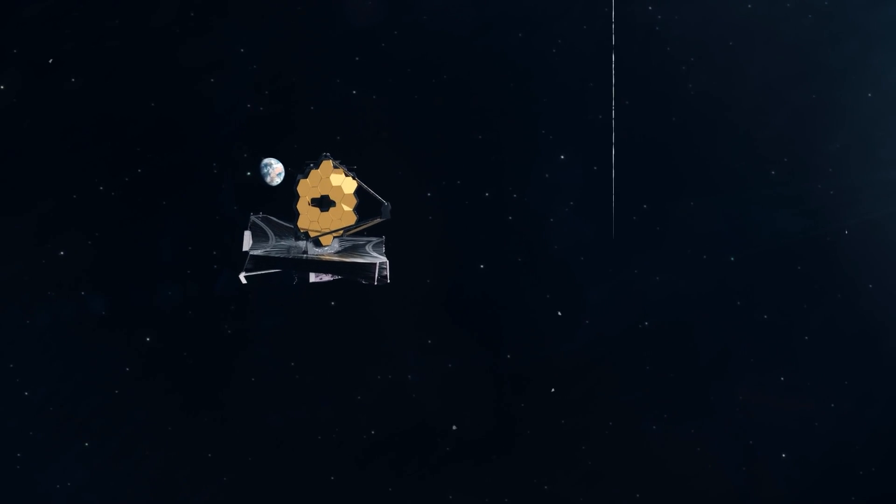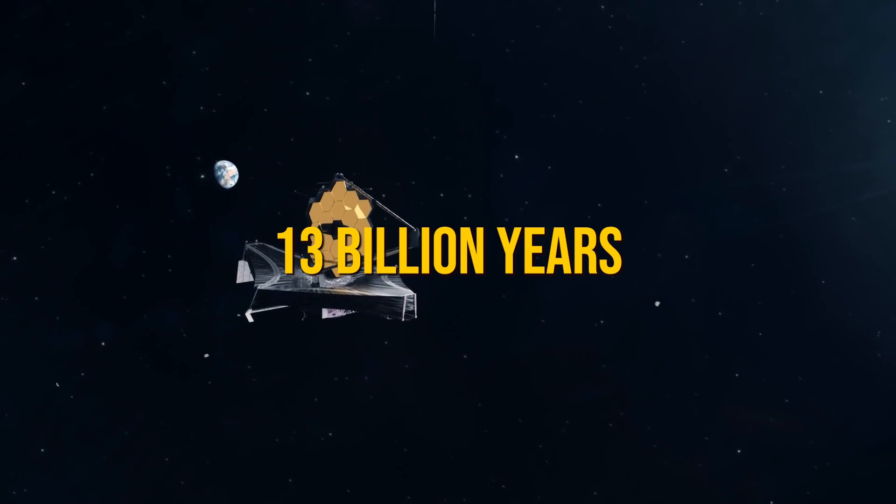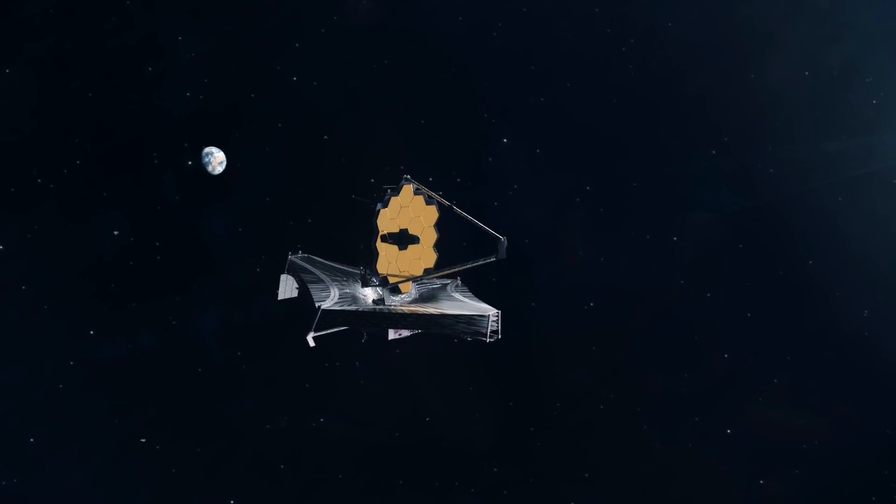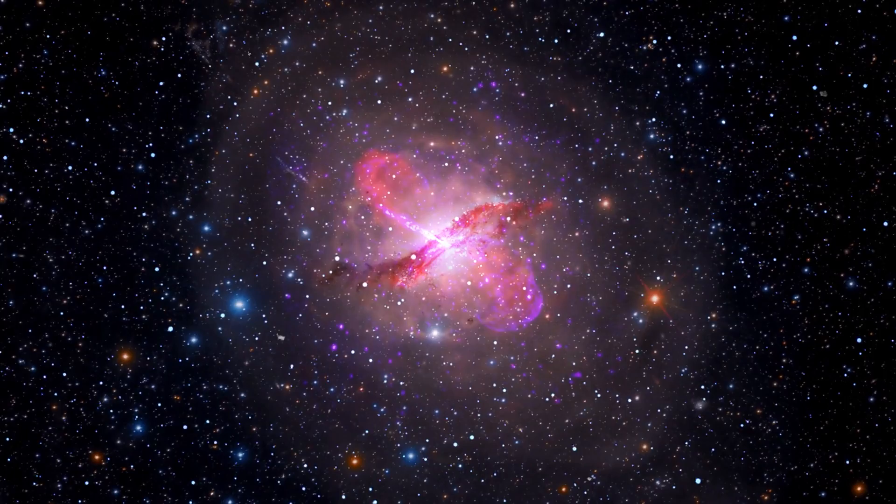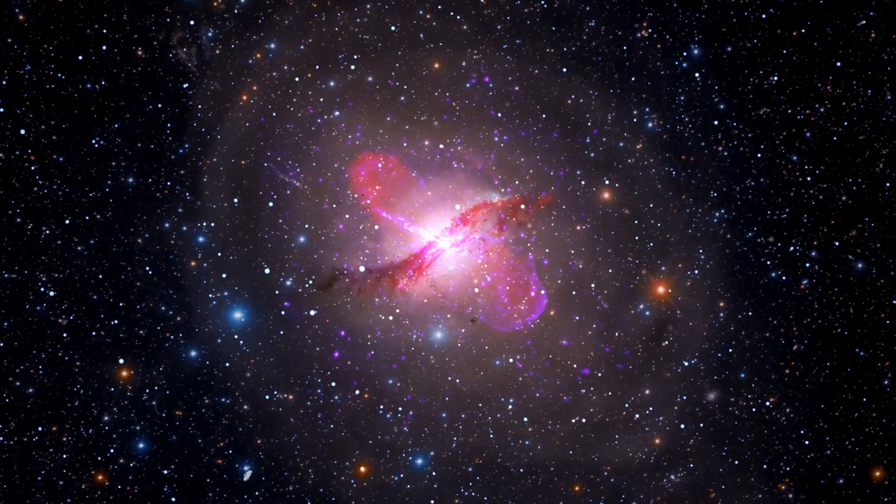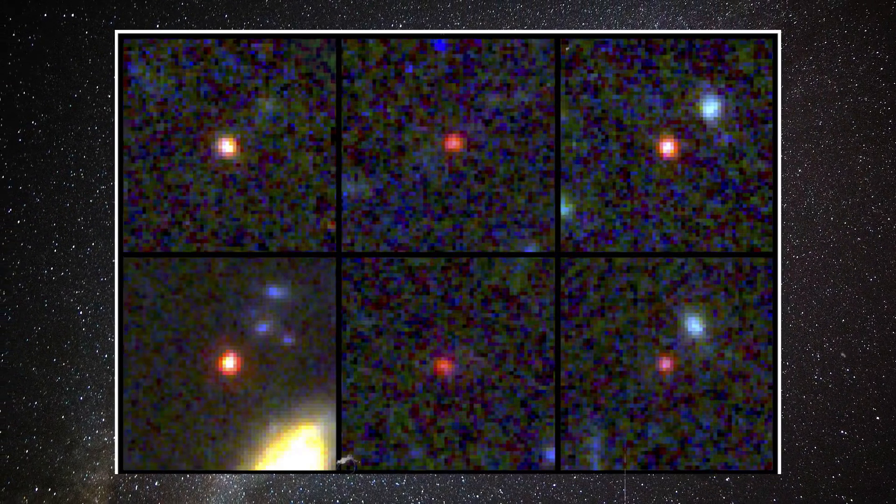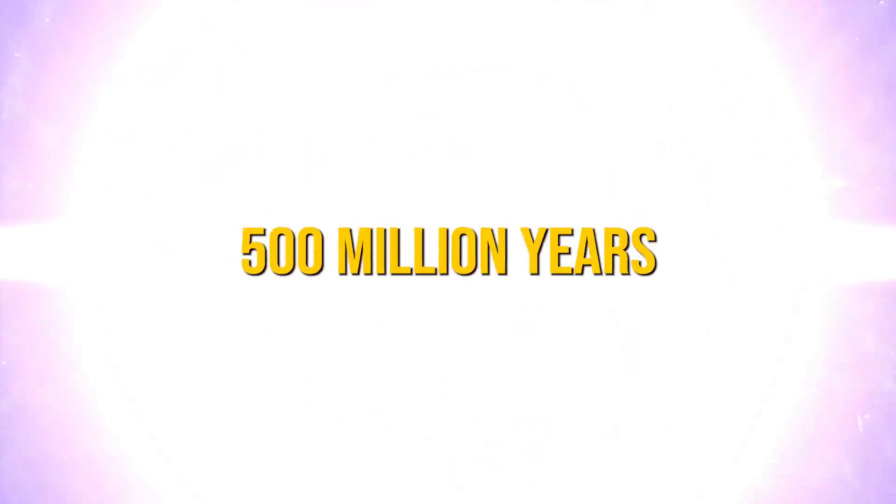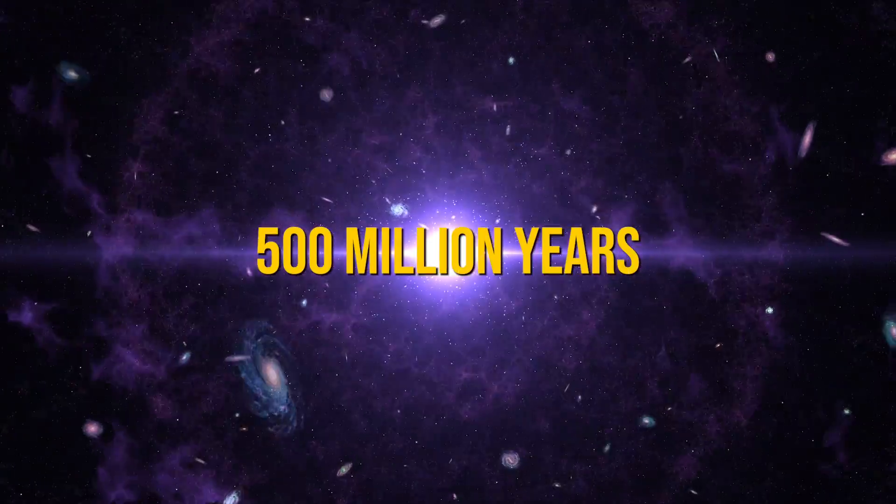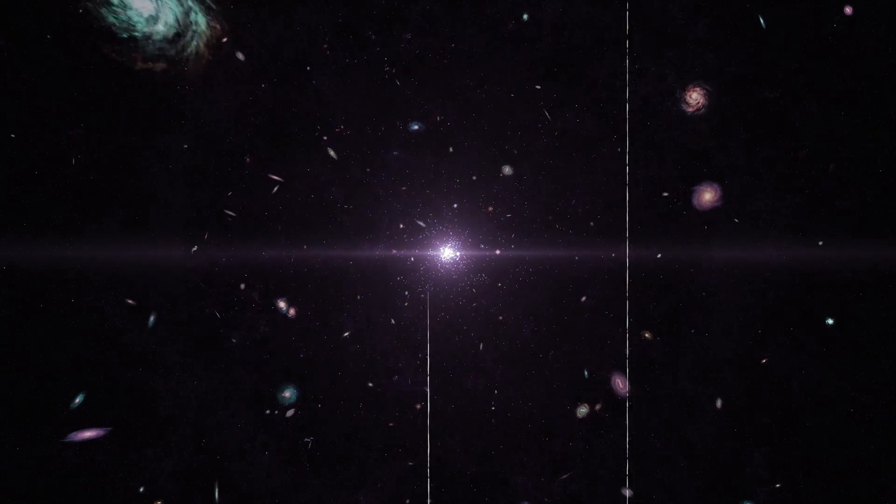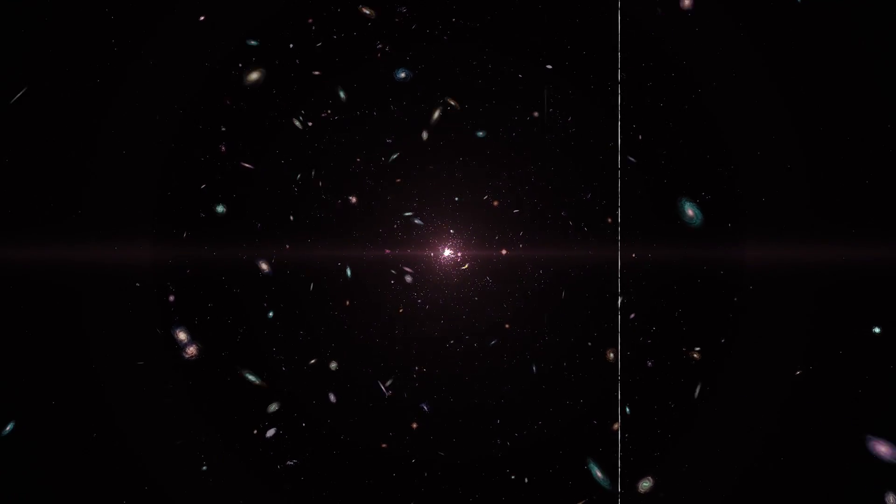The James Webb Space Telescope can look back over 13 billion years into the universe's history. This remarkable capability has led to a groundbreaking discovery: six ancient galaxies that shouldn't exist according to current theories. Found within the first 500 million years after the Big Bang, these massive and bright galaxies challenge our understanding of the early universe.